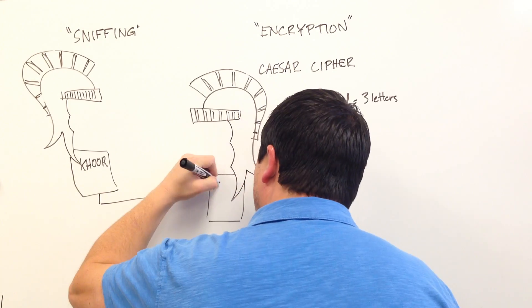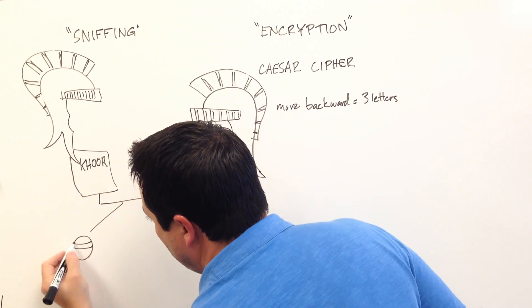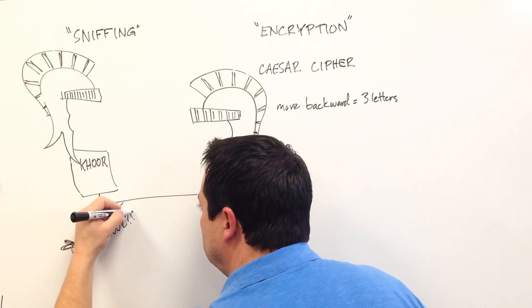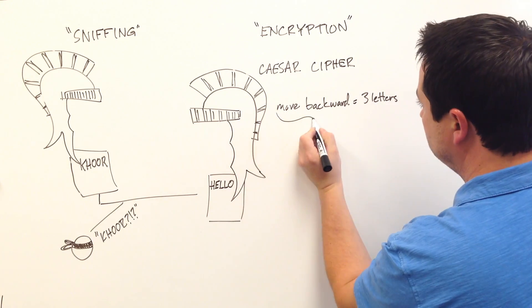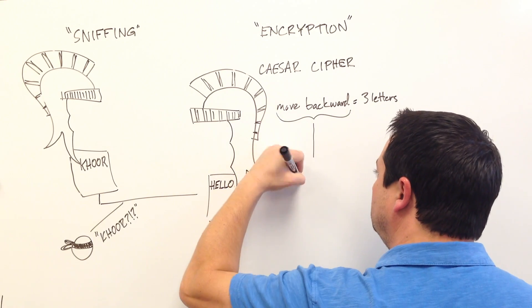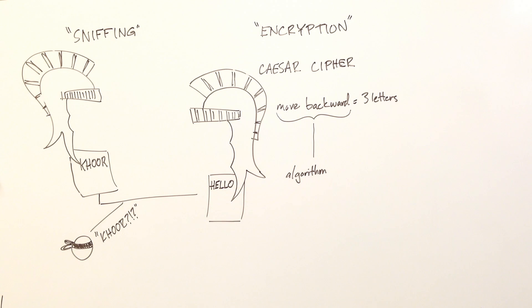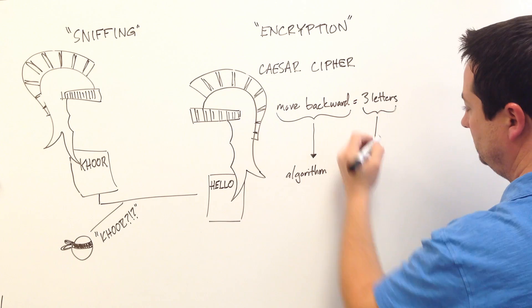Since the attacker doesn't know the procedure or the number of positions to move, he won't be able to understand the message. Encryption has two parts: the procedure used, which is also called an algorithm, and a digital key that the algorithm uses.